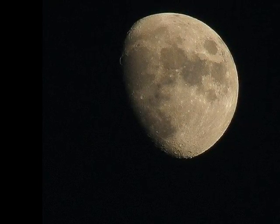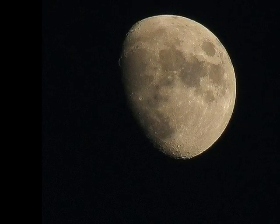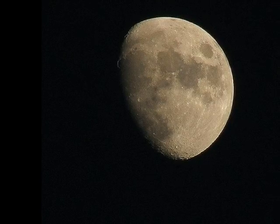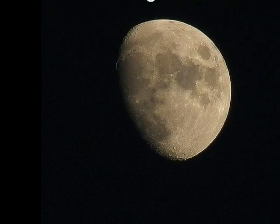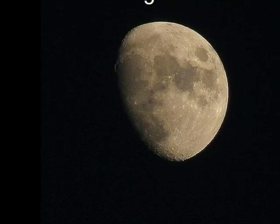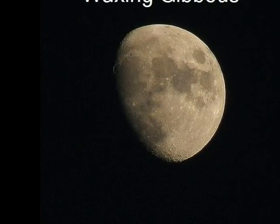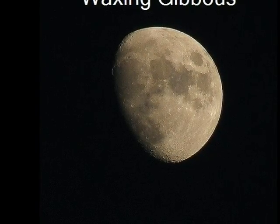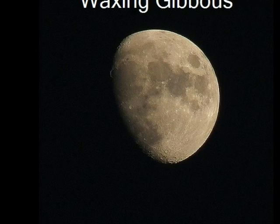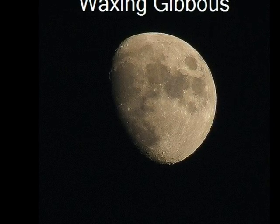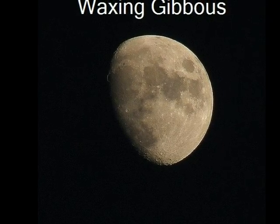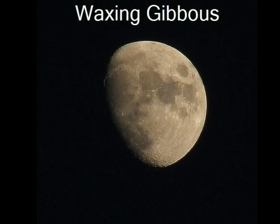A waxing gibbous is the next phase. A gibbous means the Moon is more than half illuminated. Therefore, the lit portion of the Moon is still increasing and we can see more than half of the Moon from the Earth.